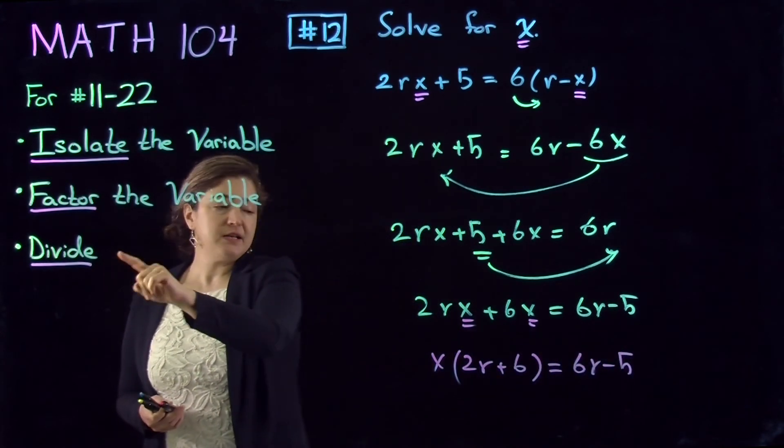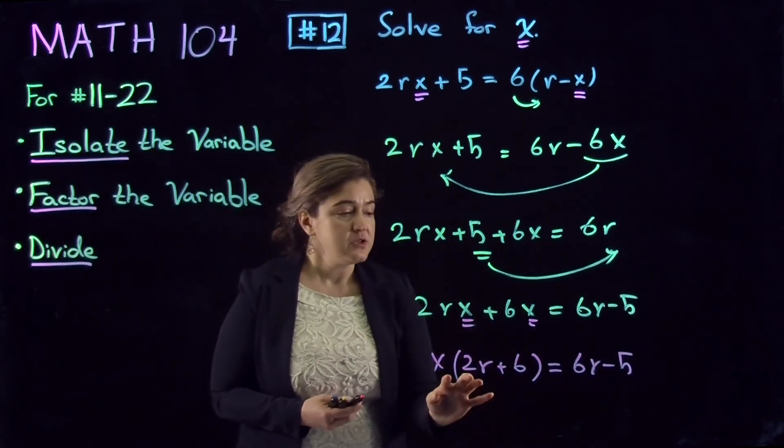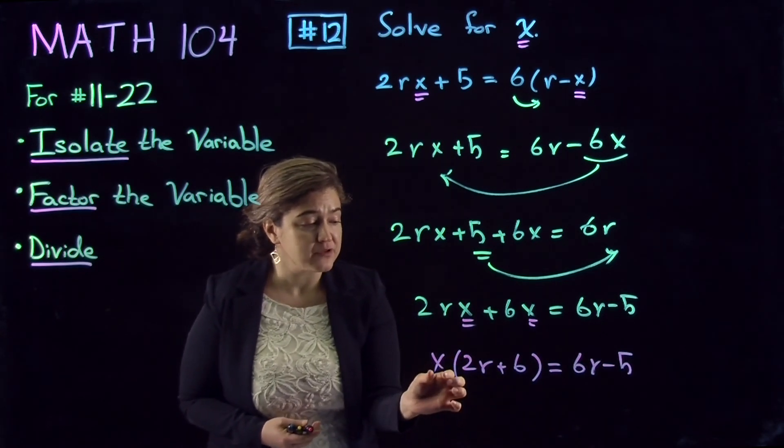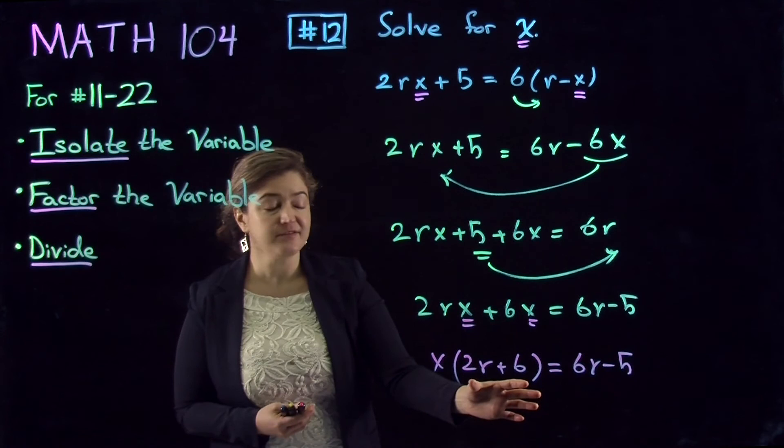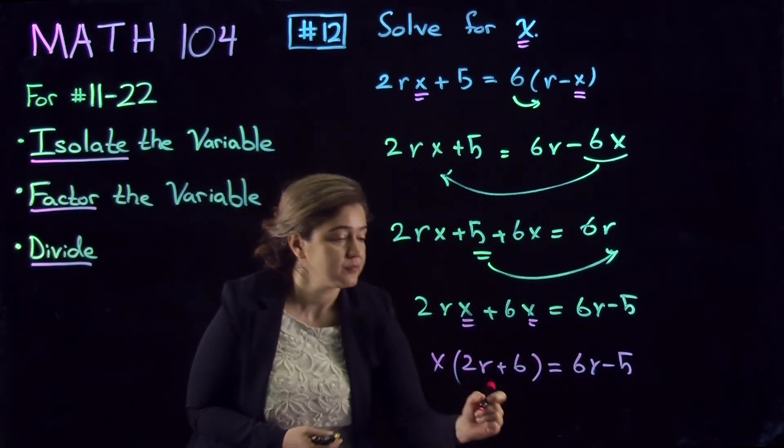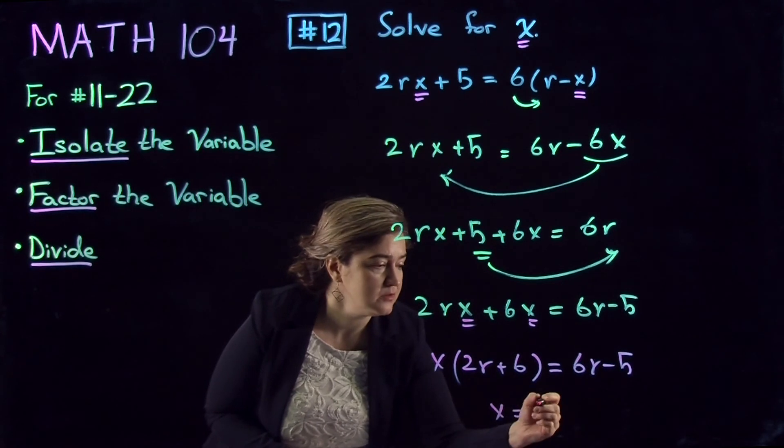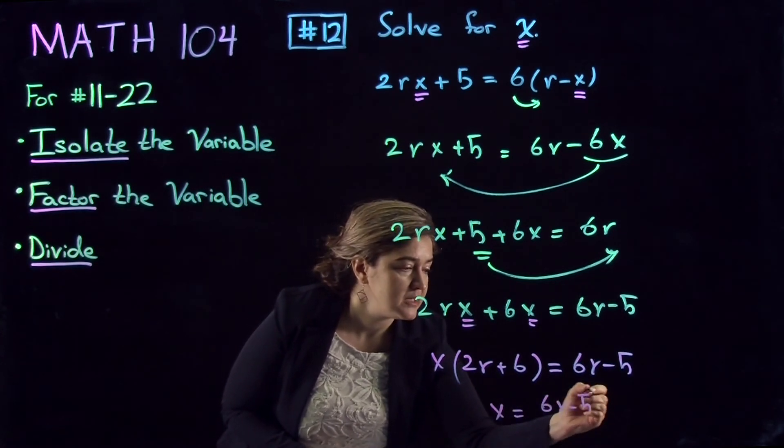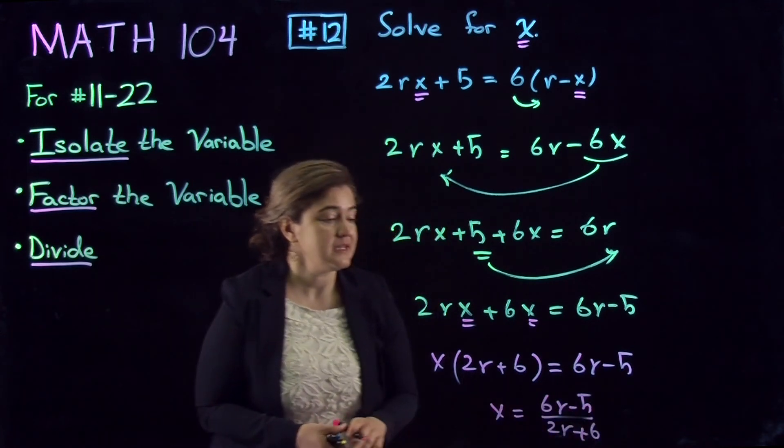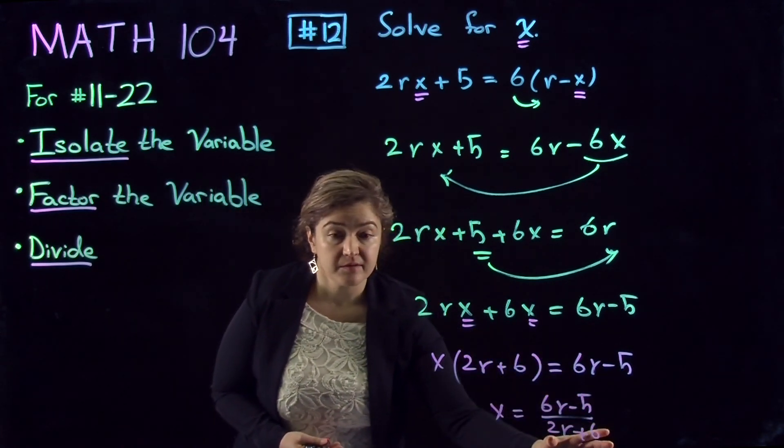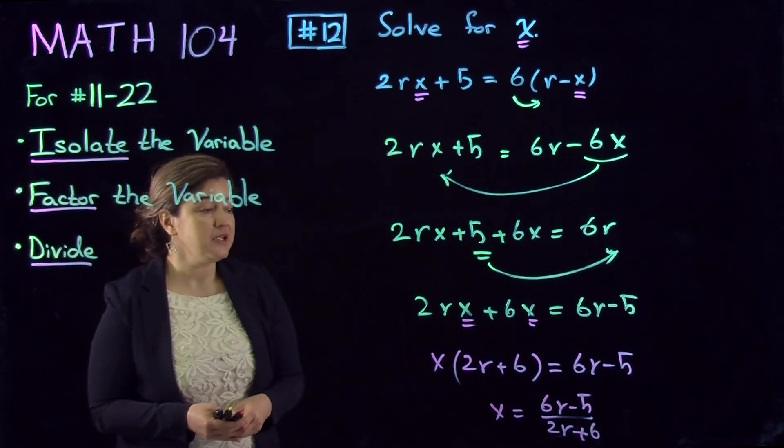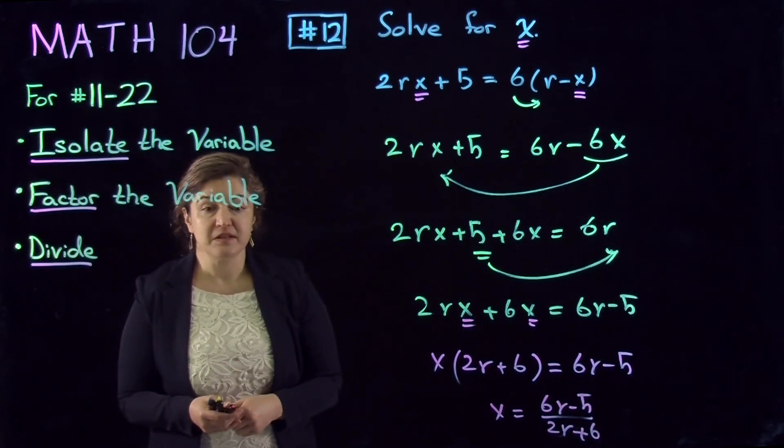The last part is divide. So we divide by what we... when we factor X, whatever is left, we divide by that, both sides of the equation. So X equals 6R minus 5 divided by 2R plus 6. This is the final answer, that's what you enter in the gateway, and there is no need to simplify. Bye.